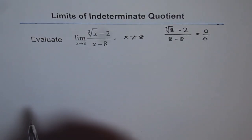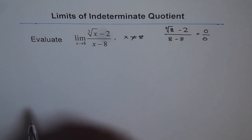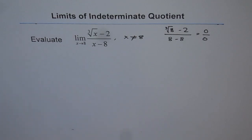But the limit can still exist because the limit is the value which we are approaching, not the value at that point. Now I will introduce you to another technique which is substitution of variable.